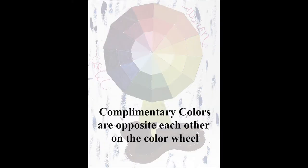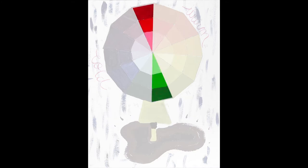Complementary colors are opposite each other on the color wheel. Red and green are opposites. Red absorbs blue and yellow waves and reflects red. Green absorbs red waves and reflects blue and yellow. All the wavelengths are represented.